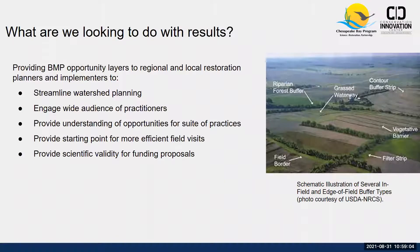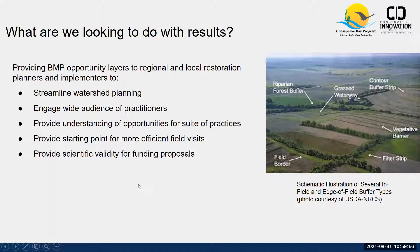There are a number of uses for these opportunity layers. They can help regional and local restoration planners streamline watershed planning and engage a wider audience by showing where opportunities exist for a suite of practices on the landscape. On the ground, this helps plan more efficient field visits and provides landowners with a menu of options — since every parcel is different, maybe a landowner doesn't want a buffer in one location but is open to a different scenario. It also provides scientific validity for funding proposals.